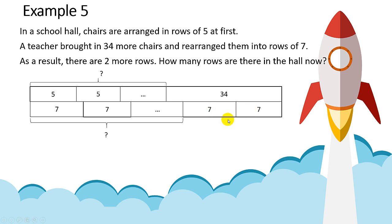We also know there are two extra rows here, so over here there are two more rows of seven. The number of rows here is the same as the number of rows on the other side. When you draw the model, make sure the length of this model is the same as the length of the other model, because the total is unchanged.